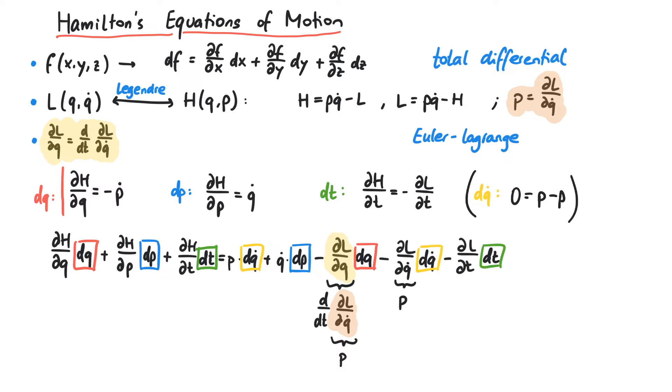There we have it. These are Hamilton's equations of motion. As you can see, instead of a second-order differential equation like the Euler-Lagrange equation, we now have two first-order differential equations in the Hamiltonian formulation.